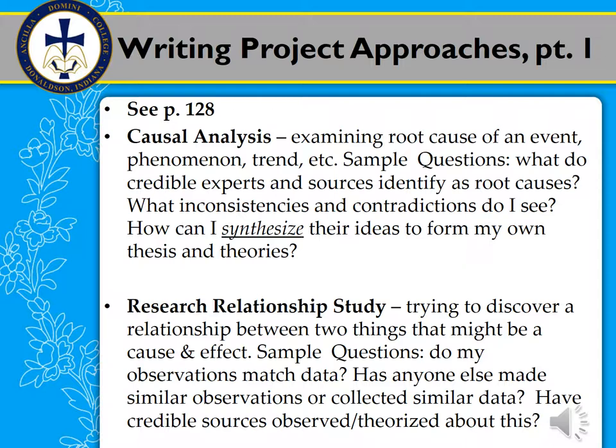Another type is a research relationship study — where you're trying to discover a relationship between two things that might be cause and effect. Maybe you don't have many sources early on, but you observe something and ask: does my observation match the data? The book's example is someone noticing students on campus chatting on cell phones, then developing a research study to examine whether this relates to a drop in students joining campus clubs and activities across the country.